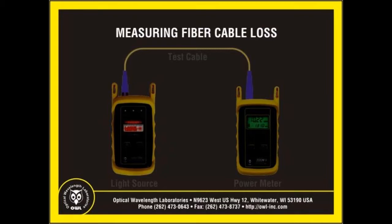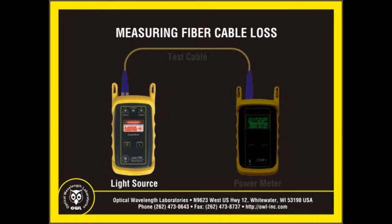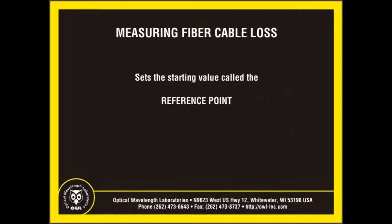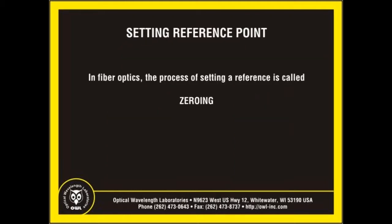Taking a measurement of any kind involves comparing a starting value and an ending value, then calculating the difference. This measurement is then compared to a specification to determine success or failure of whatever is being measured. In the case of measuring fiber cable loss, a technician must first connect a transmitter, called a light source, to a receiver, called a power meter, through one or more test cables in order to determine the starting value, which is called the reference point. In fiber optics, this process is called zeroing.